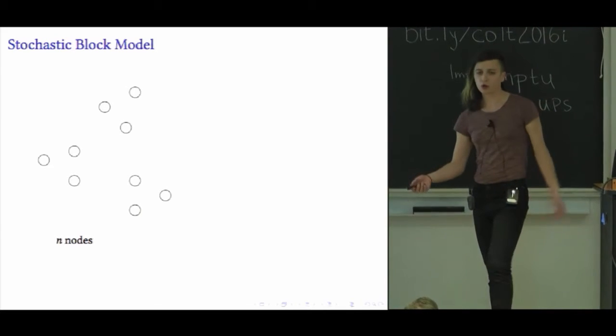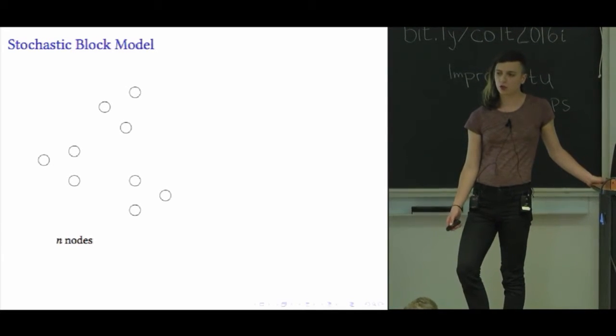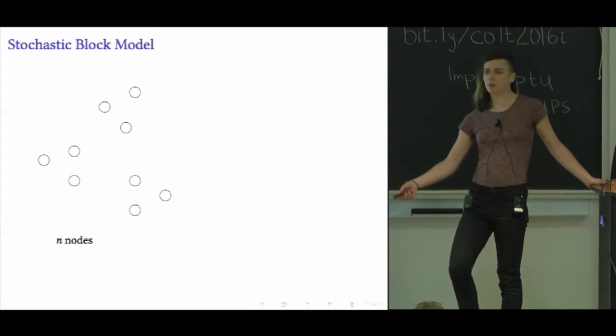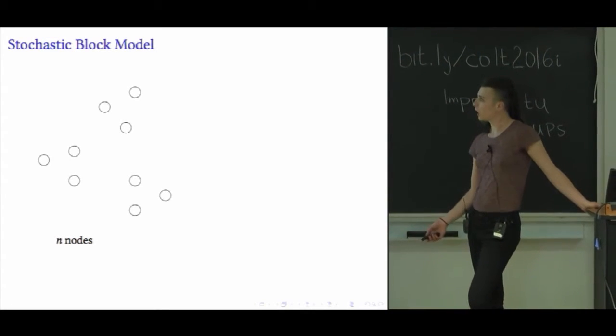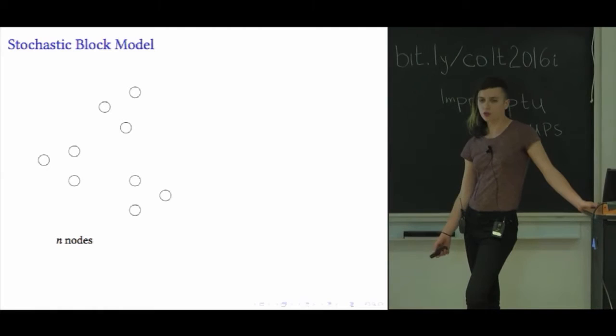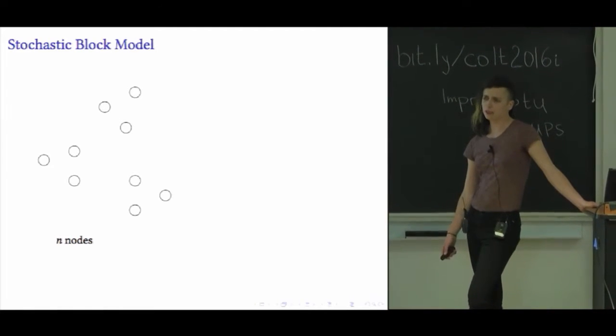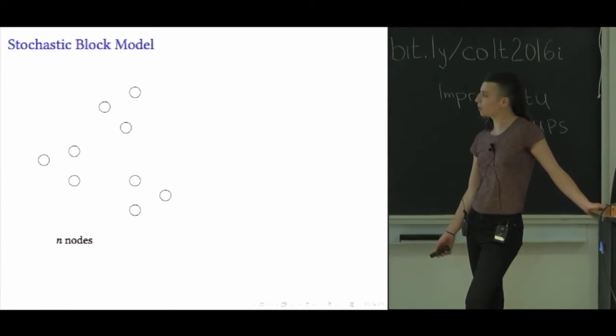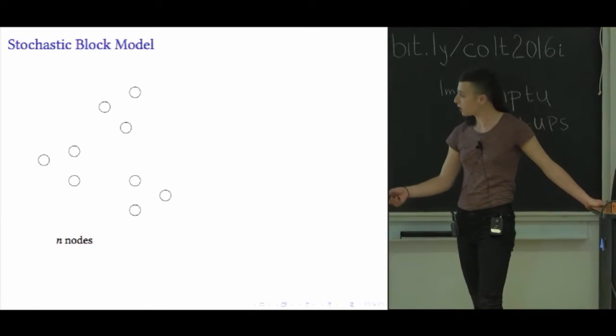A good way to approach studying data like this is to imagine it was generated from a particular generative model and then fit that model to the data. The literature over the past 15 or so years has generated an entire menagerie of models with community structure, but the most classic one is the stochastic block model.